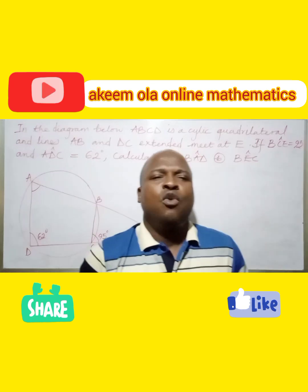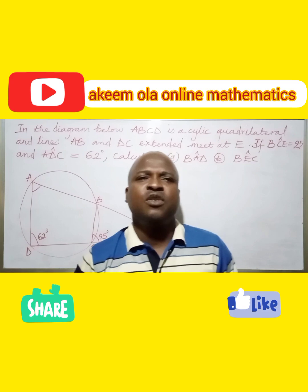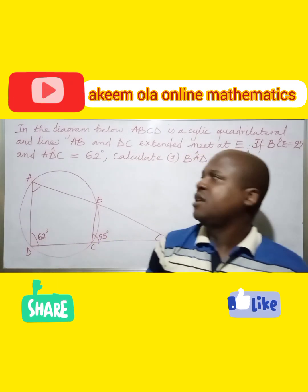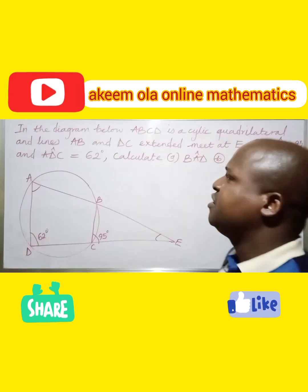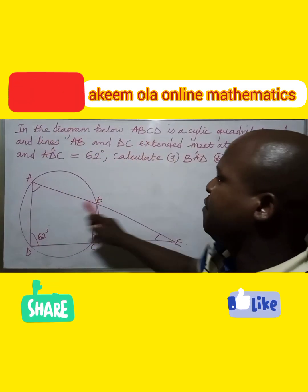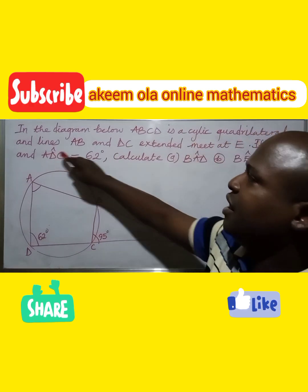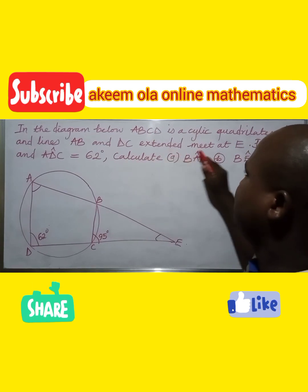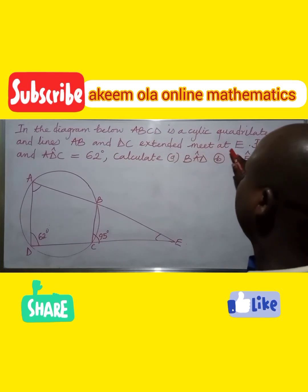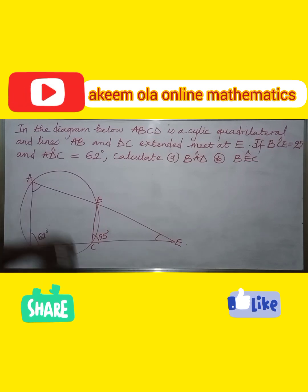Salutations to you all. We have another question to solve today on cyclic quadrilaterals. In the diagram on the board, ABCD is a cyclic quadrilateral and lines AB and DC extended meet at E. We are told that angle DCE is 95°, and angle ADC is 62°.